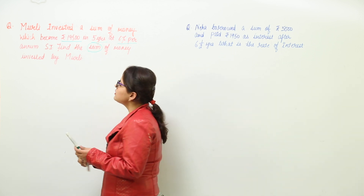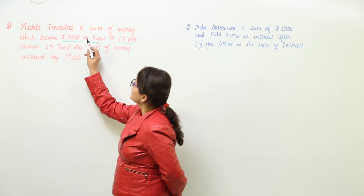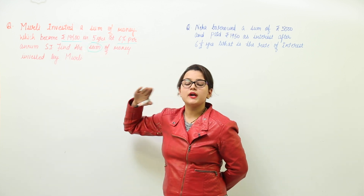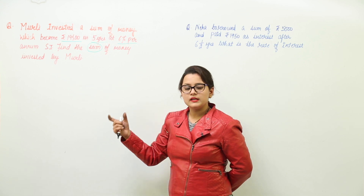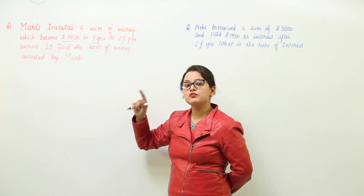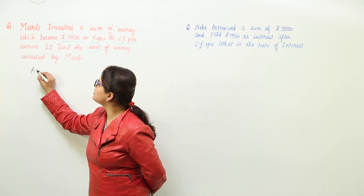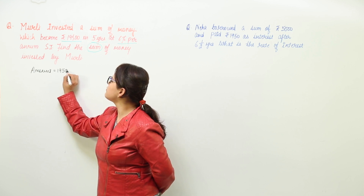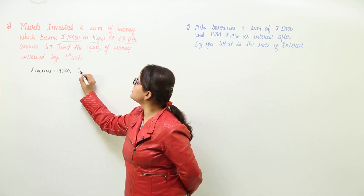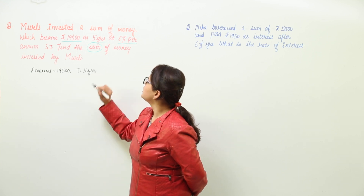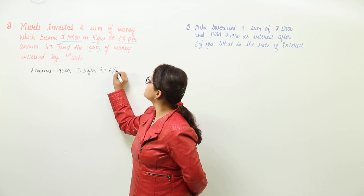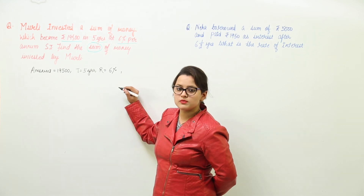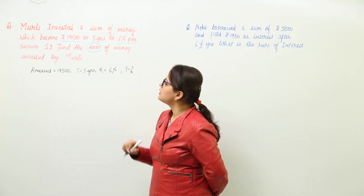First, write down whatever values are given. He invested a sum of money which became 19,500 in 5 years — that means 19,500 is the amount paid after 5 years. So amount = 19,500, time = 5 years, rate = 6% per annum. We have to find the sum, which represents the principal.